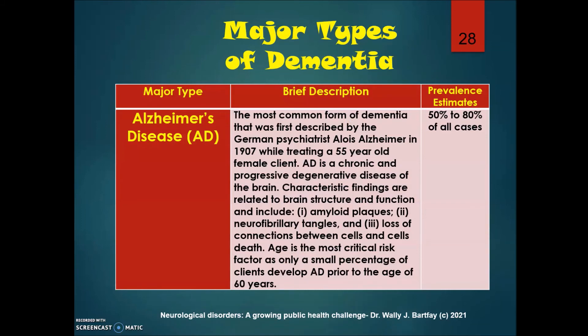Alzheimer's disease accounts for 50 to 80 percent of all dementia cases. It was first described by German psychiatrist Alois Alzheimer in 1907 while treating a 55-year-old female client. AD is a chronic and progressive degenerative disease of the brain involving plaque formation, loss of connections between cells, and cell death. Age is the most critical risk factor, as only a small percentage of clients develop AD prior to the age of 60.